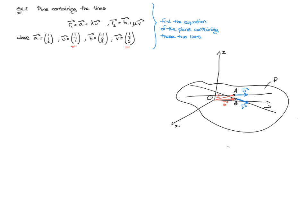Now, to find the equation of a plane, the most important thing is to remember the definition of the vector equation of a plane. We know that a plane is defined by a vector equation looking something like R is equal to some position vector of a point contained in the plane — which I'm calling A — plus alpha U, plus beta V, where U and V are two non-collinear vectors fully contained in that plane.